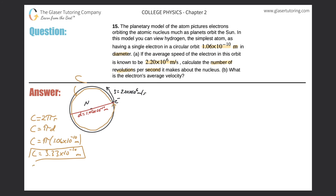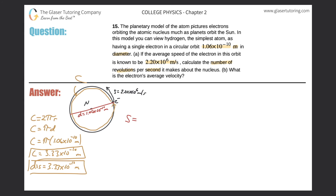In other words, this is the distance — the distance it travels to make one revolution is 3.33 times 10 to the negative 10 meters. So if that's the distance and they told us the speed, can we find the time it takes to travel that distance? Sure. The mathematical relationship is that average speed equals distance traveled divided by time. The average speed is 2.20 times 10 to the 6 meters per second, and the distance for one revolution we just calculated was 3.33 times 10 to the minus 10 meters.